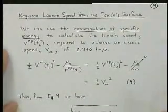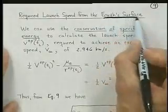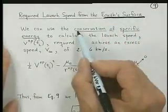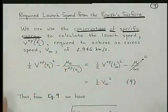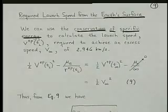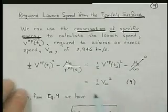So how fast do we have to go on the Earth's surface to achieve this V infinity value? We use the conservation of specific energy to calculate the launch speed required to get an excess speed of 2.946 kilometers per second.